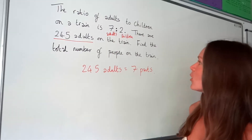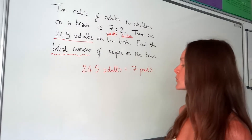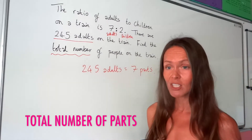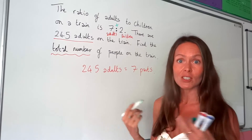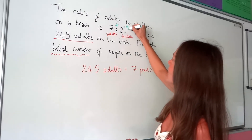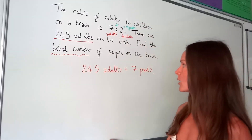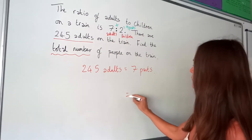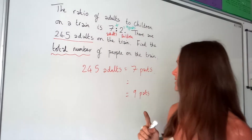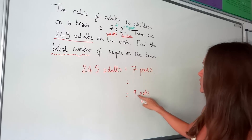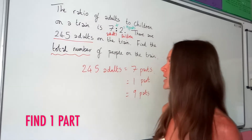Our job is to find the total number of people on the train. To work out the total number of people we must also work out the total number of parts in the ratio. We've got seven parts and two parts, so adding those together: seven plus two is nine - we have nine parts in total. To work out nine parts we first need to find the value of one part, since it's awkward going directly from seven to nine.